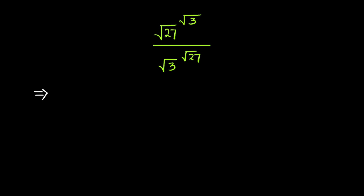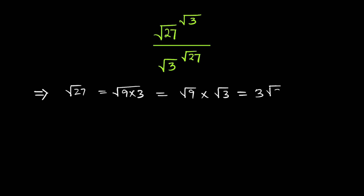The square root of 27 can be written as the square root of 9 times 3, which equals the square root of 9 times the square root of 3. Since the square root of 9 is 3, we have 3 root 3.